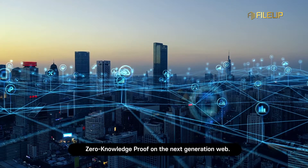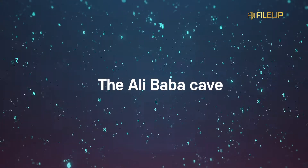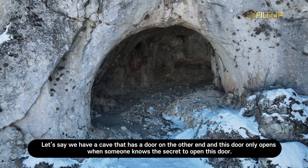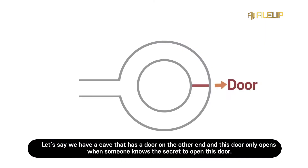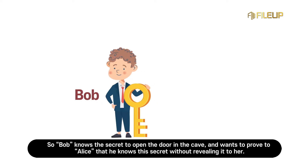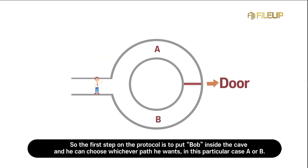Let's say we have a cave that has a door on the other end, and this door only opens when someone knows the secret to open it. Bob knows the secret to open the door in the cave and wants to prove to Alice that he knows the secret without revealing it to her. The first step of the protocol is to put Bob inside the cave, and he can choose whichever path he wants — in this case, path A or path B.